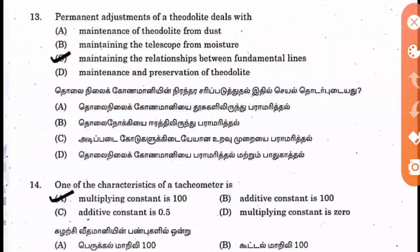Normally, permanent adjustments involve adjustment of the plate level, adjustment of the line of sight, and so on. There are 5 fundamental lines in a theodolite: the vertical axis, horizontal axis, line of collimation, altitude level axis, and plate level axis. Adjustments of all these are called permanent adjustments.